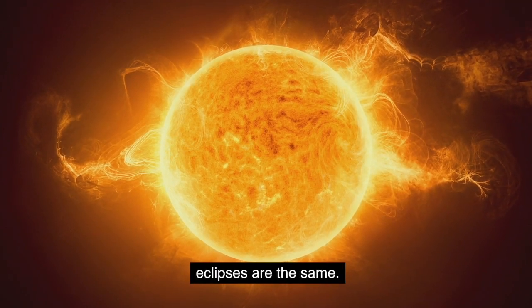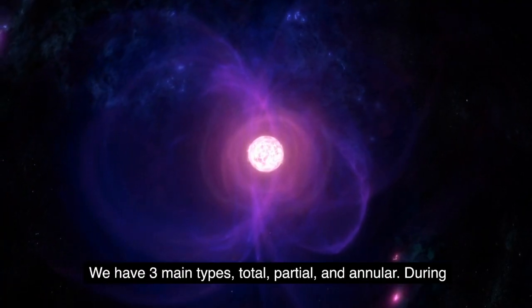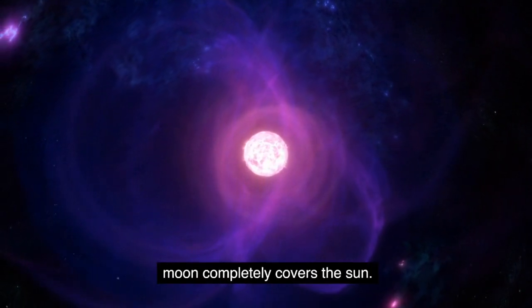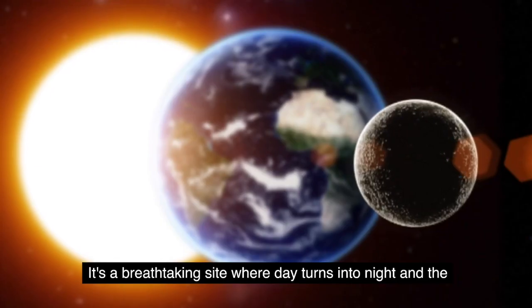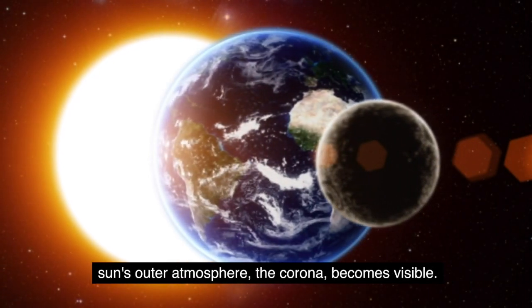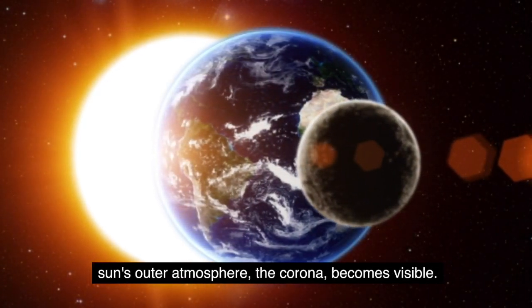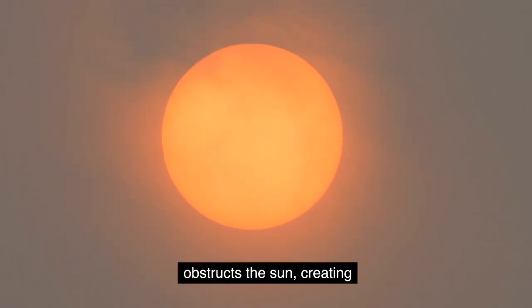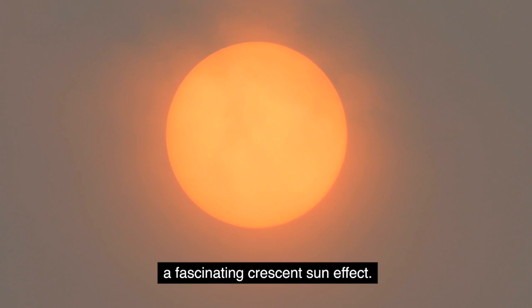But not all eclipses are the same. We have three main types: total, partial, and annular. During a total solar eclipse, the moon completely covers the sun. It's a breathtaking sight where day turns into night and the sun's outer atmosphere, the corona, becomes visible. In a partial solar eclipse, the moon only partially obstructs the sun, creating a fascinating crescent sun effect.